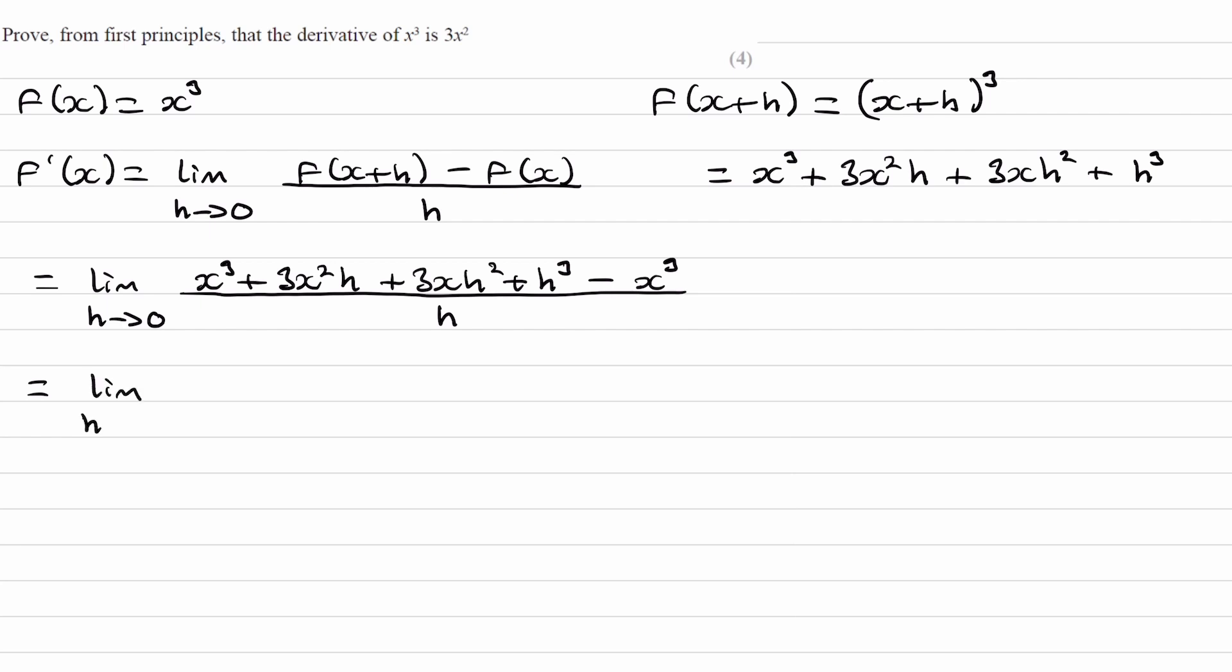So I'll simplify the numerator. The x cubes cancel, and we're left with 3x squared h plus 3x h squared plus h cubed.